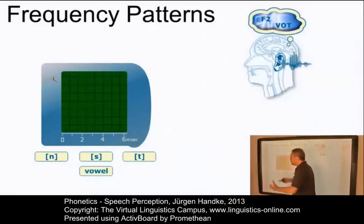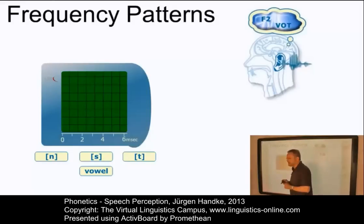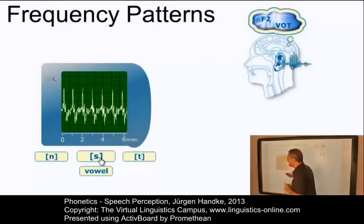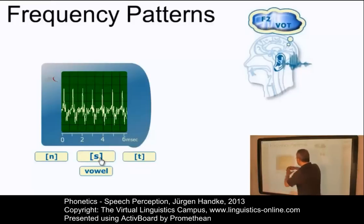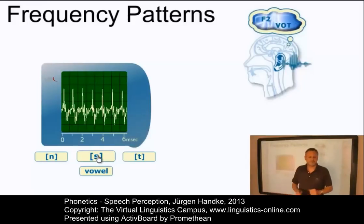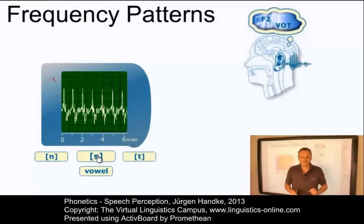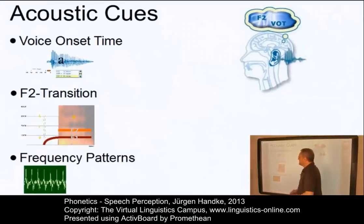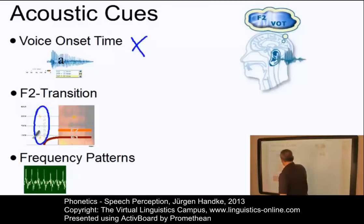Another cue that we rely on in the perception of speech is frequency patterns. The frequency of certain parts of the sound wave helps to identify a large number of speech sounds. Fricatives, for example, involve a partial closure which produces turbulence in the airflow and results in a noisy sound spreading over a broad frequency range. This friction noise is relatively unaffected by the context in which the fricative occurs and may thus serve as a nearly invariant cue for its identification. Having discussed the three central acoustic or perceptual cues — voice onset time, F2 transition, the locus of F2, and frequency patterns — let us now see whether there is a central unit on the basis of which we segment the incoming signal.